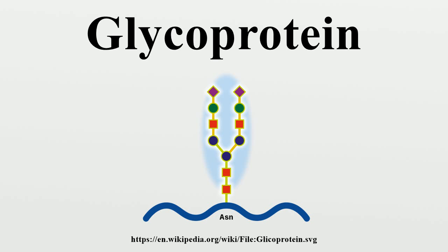Glycoproteins are important for white blood cell recognition, especially in mammals. Examples of glycoproteins in the immune system include molecules such as antibodies, which interact directly with antigens, and molecules of the major histocompatibility complex, which are expressed on the surface of cells and interact with T-cells as part of the adaptive immune response.